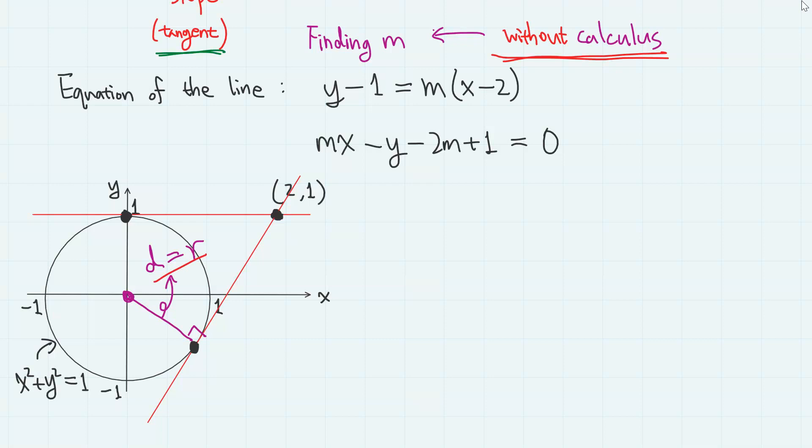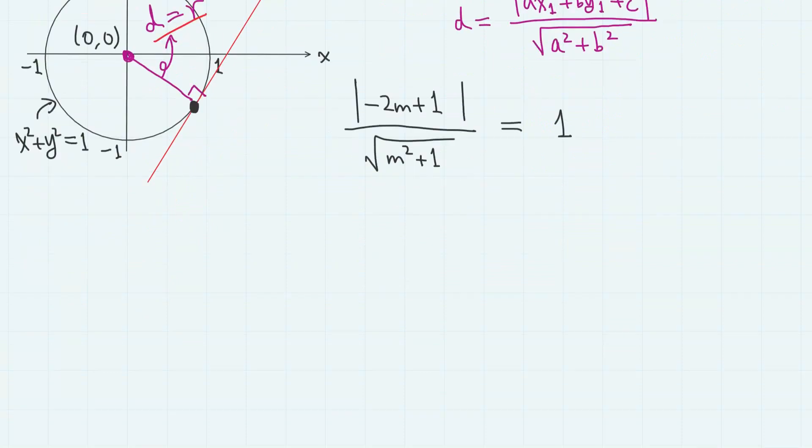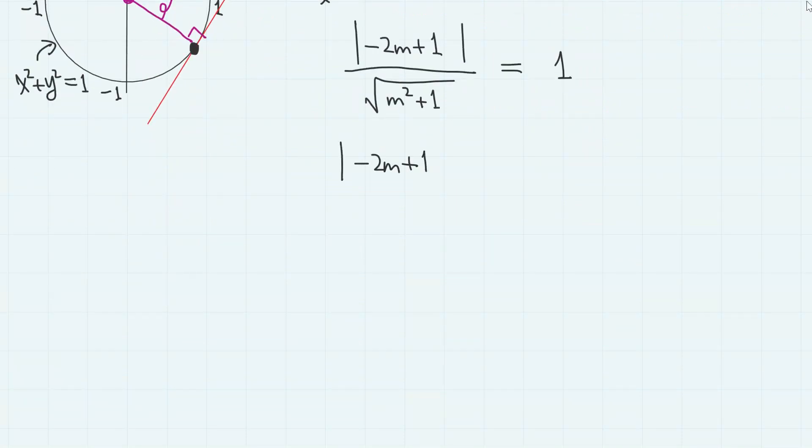And it is this property that allows us to find the value of the slope without using calculus. Here, the center is 0 comma 0. So using the distance between a point and a line formula, we have absolute value of x1 and y1 are both 0 in this case. So we only have the value of c, which is minus 2m plus 1 divided by square root of m squared plus 1. And this must be equal to the radius of the circle, which is 1. So we have absolute value of minus 2m plus 1 equals square root of m squared plus 1.